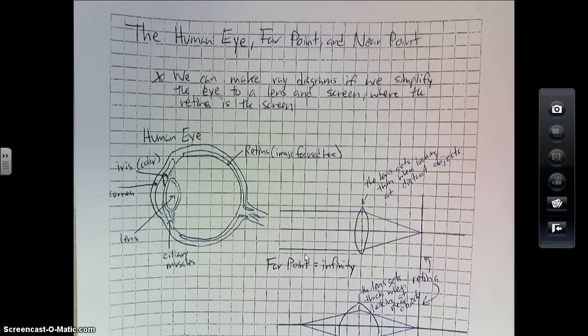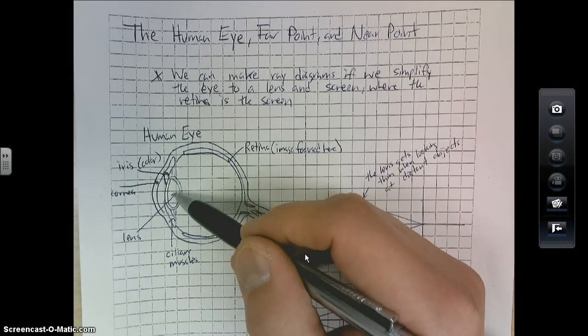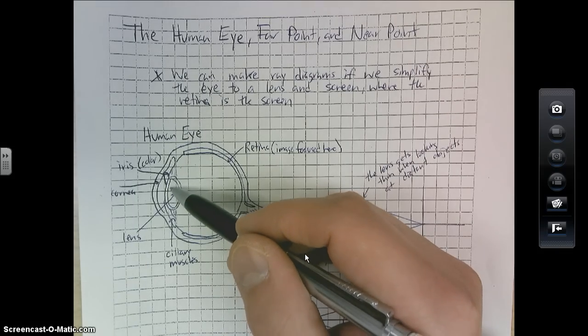So if you look here, I've got a diagram of the human eye, where at this particular spot, this is what's known as the lens of your eye.